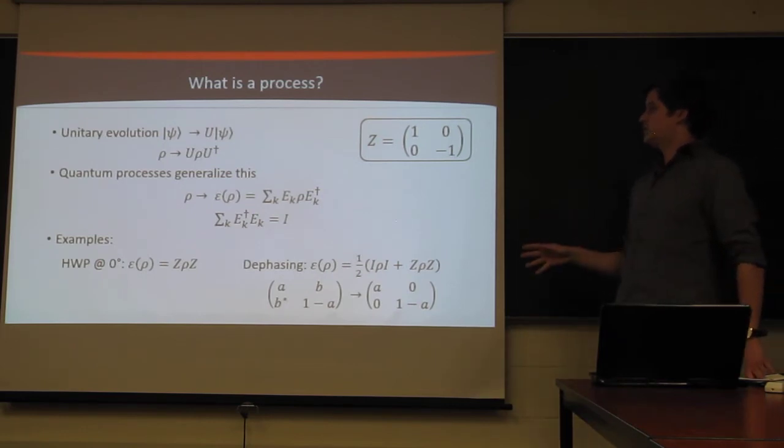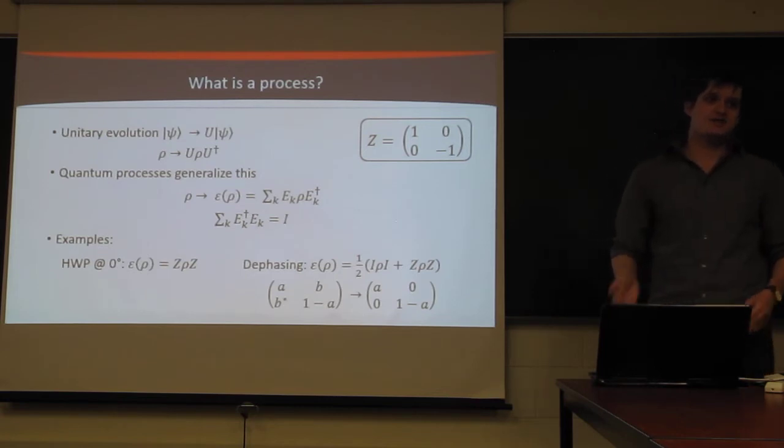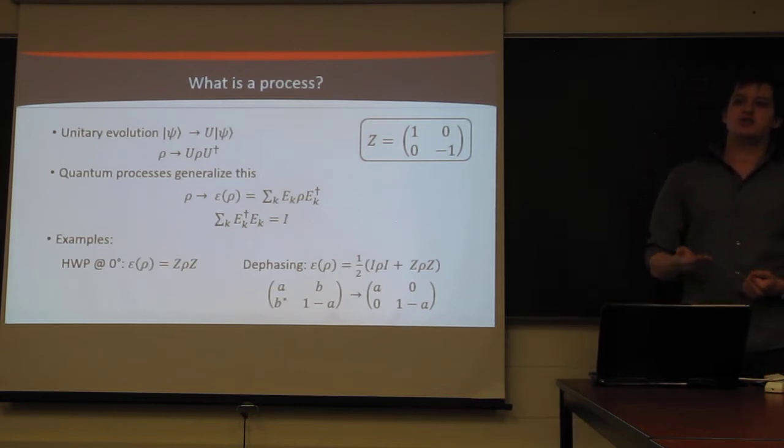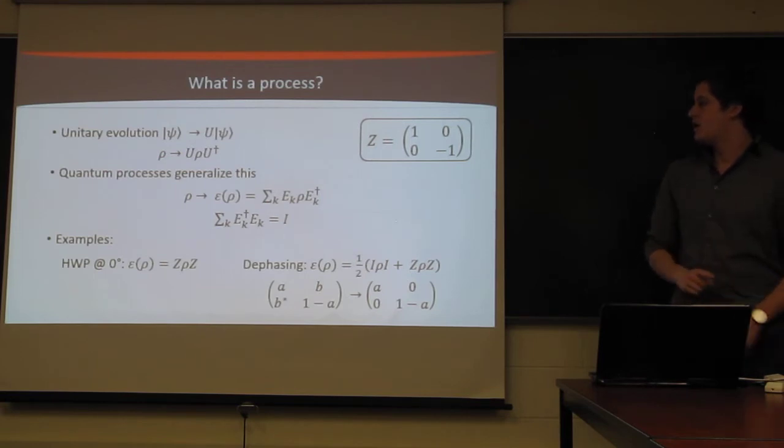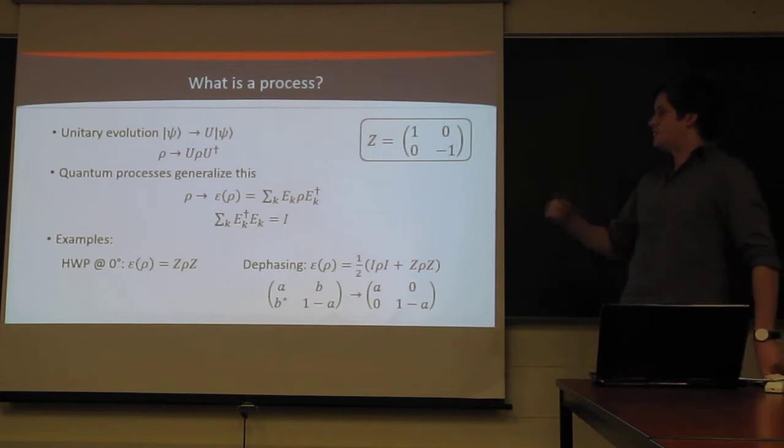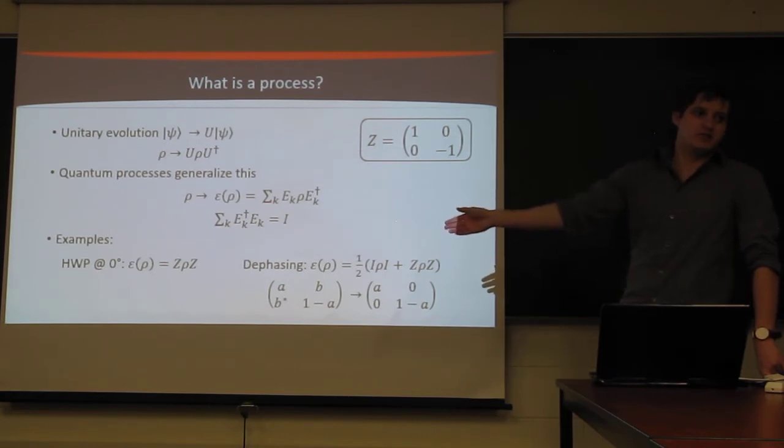Some examples that may be familiar, may be unfamiliar. So if we have a half-wave plate that's at zero degrees, that's going to take V to minus V, and so take D and A and flip. In terms of an actual unitary process, that just corresponds to taking a Pauli Z operator and multiplying it by whatever state we have.